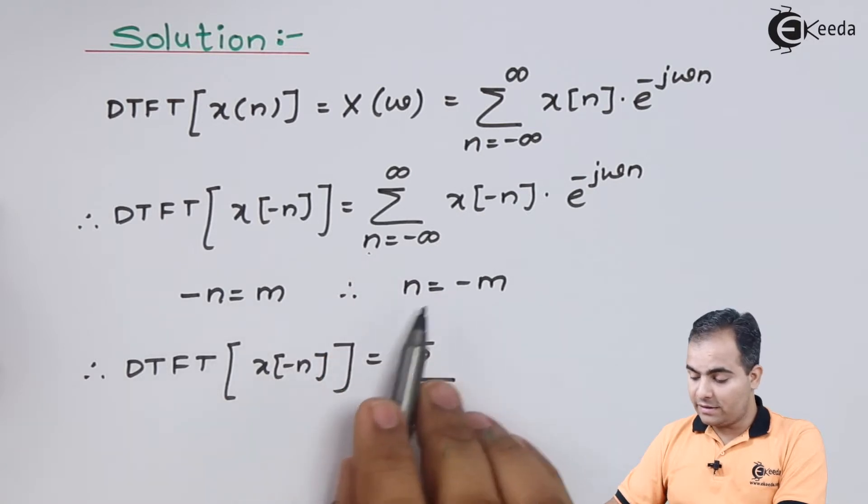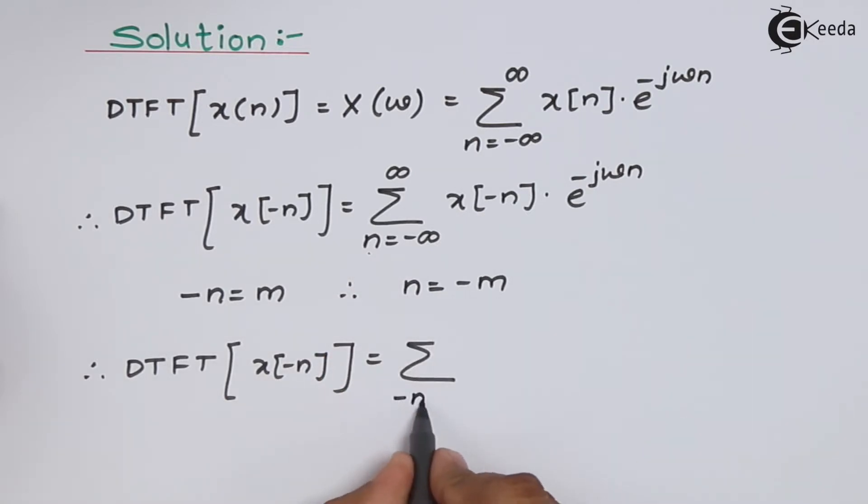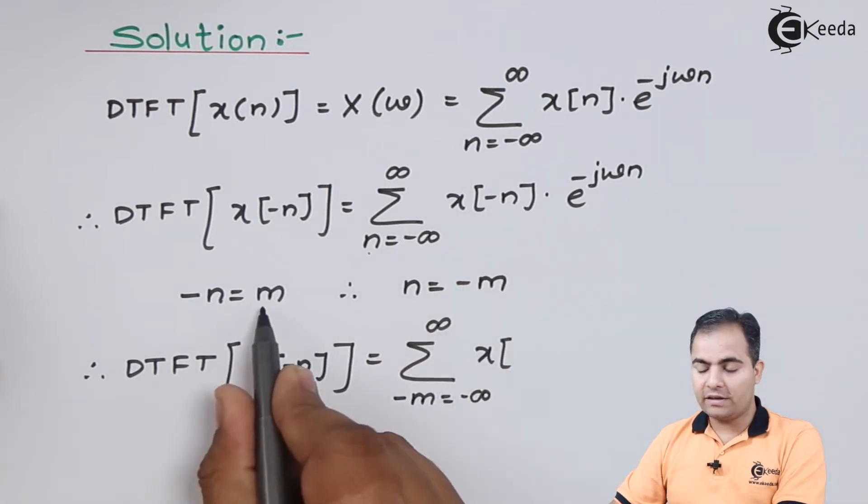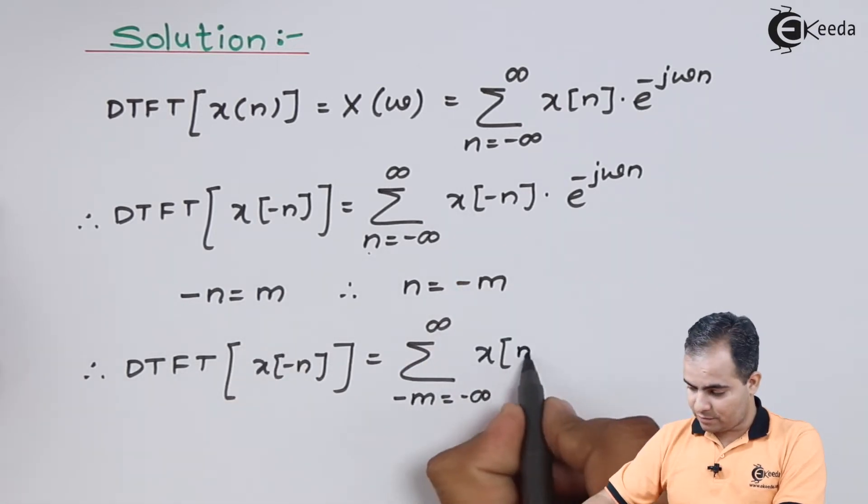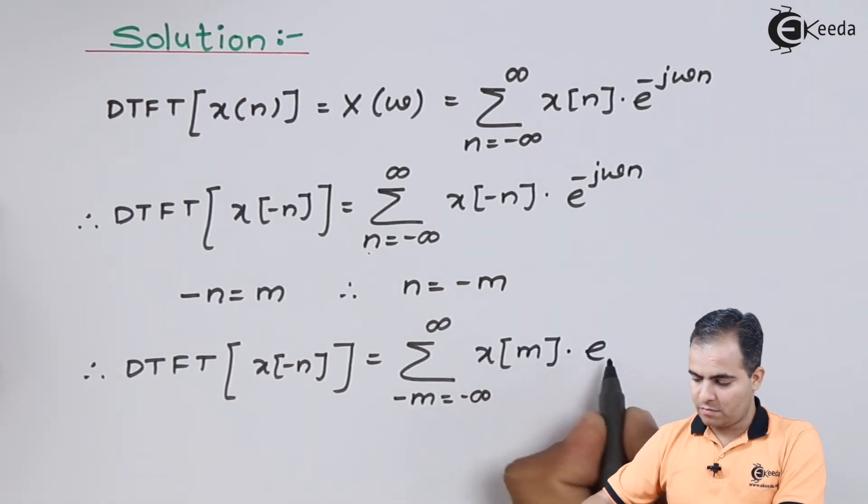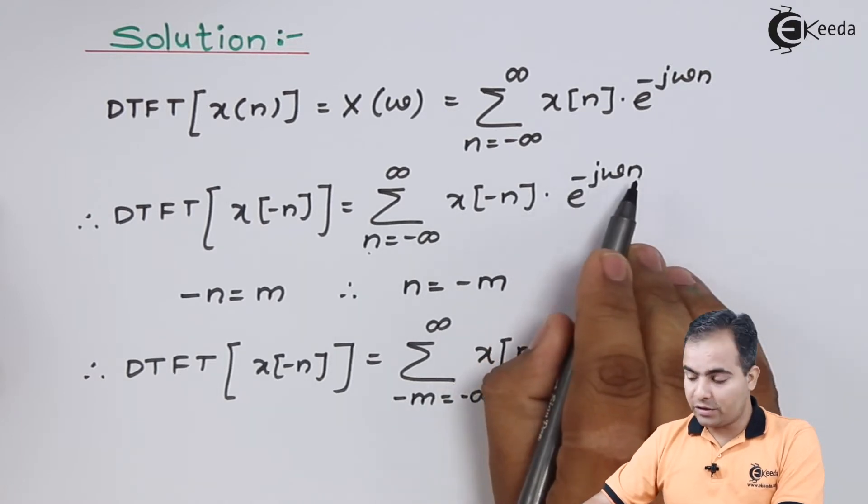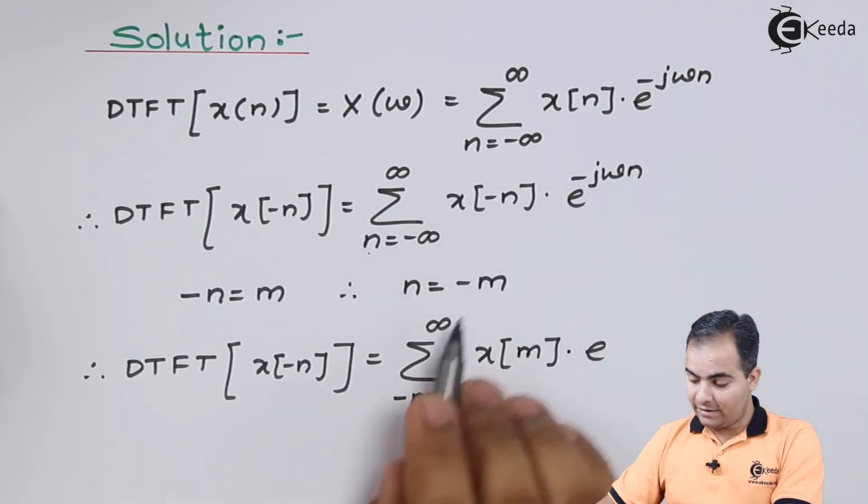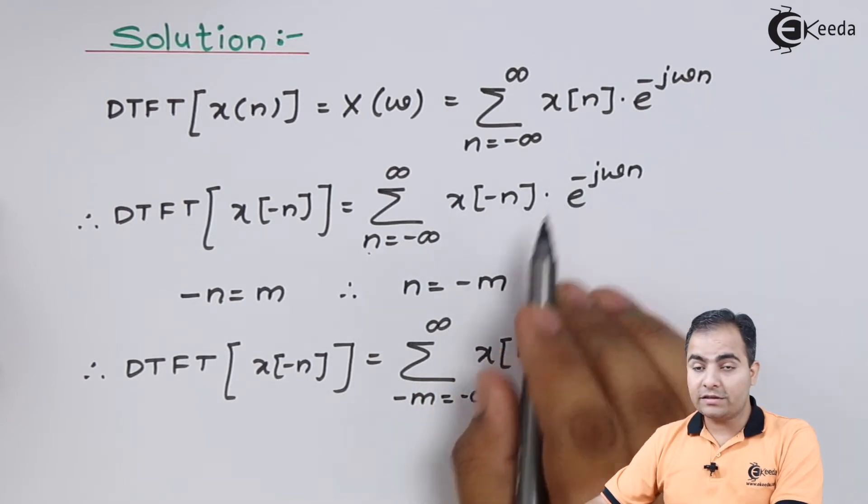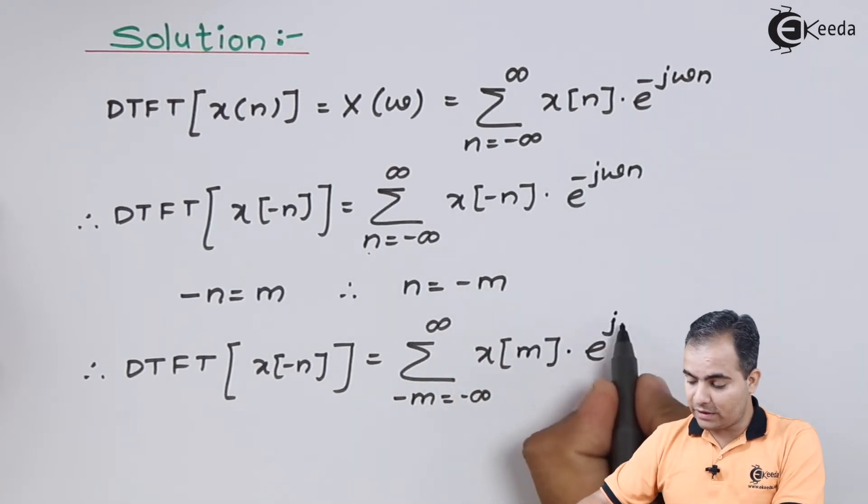This n is replaced by minus m. This minus n is replaced by m, and this minus minus will change the sign which will be now plus.